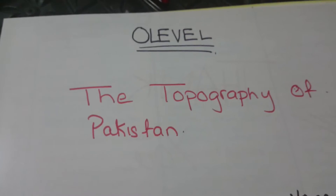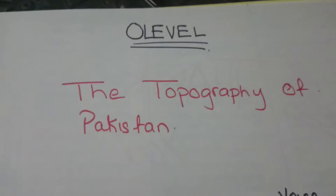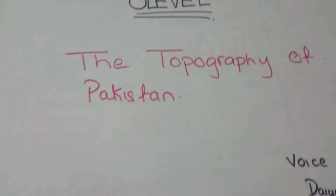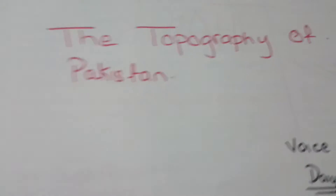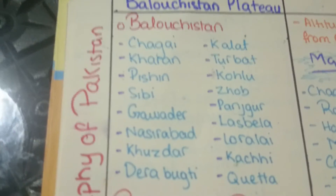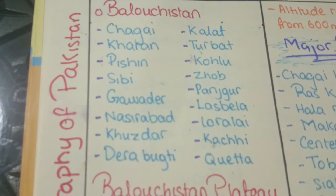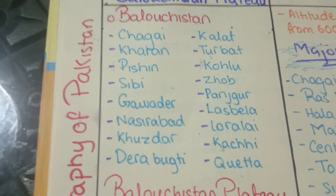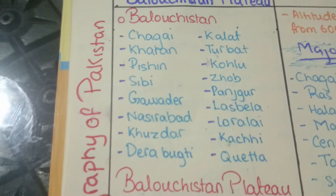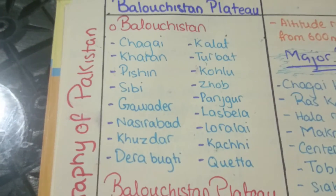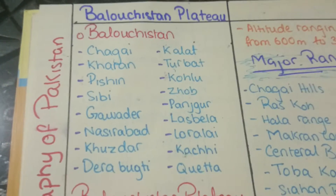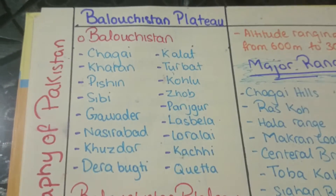This lecture is for all of the students on the topography of Pakistan, lecture number three: the Balochistan Plateau. Balochistan consists of many regions; the main ones are Quetta, Kachi, Lasbela, Gwadar, Nasirabad, Sibbi, and Kalat.